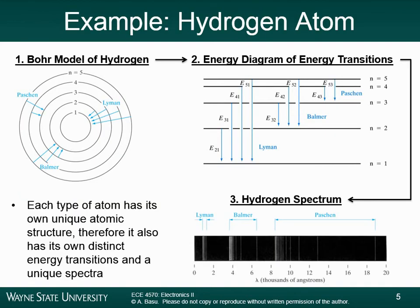As a result of this unique set of energy transitions, every type of atom will have a unique spectrum that it gives off. The color of the light — the spectrum emitted by a certain type of atom — can actually help you identify what type of atom it is. This is what spectroscopists do if they're trying to identify a certain type of gas.